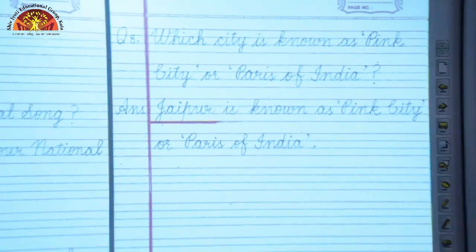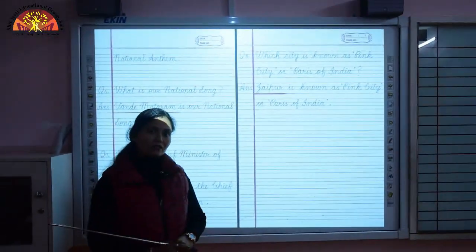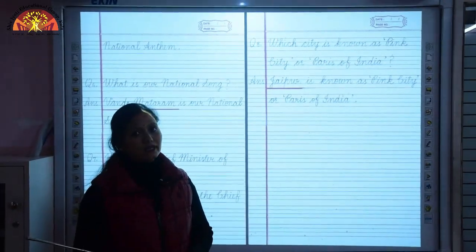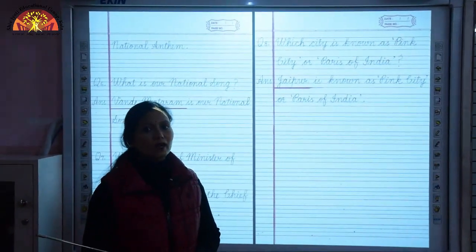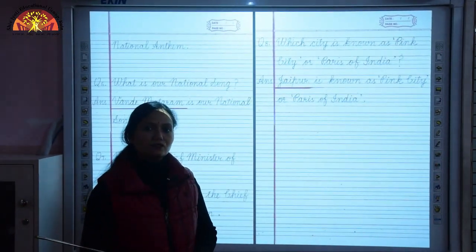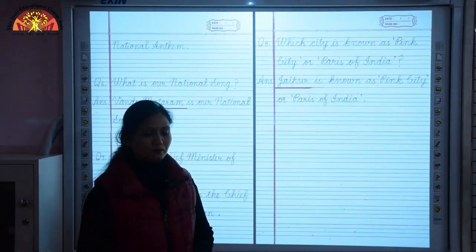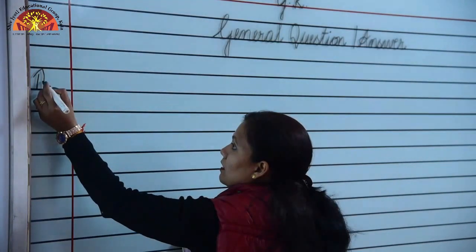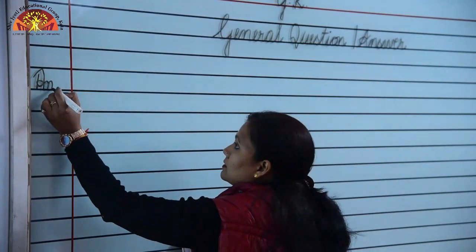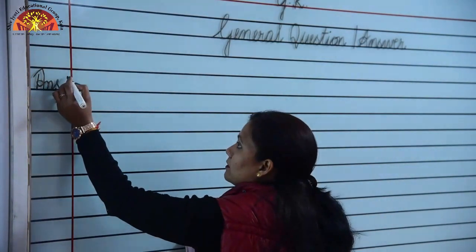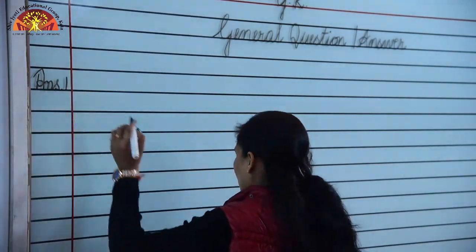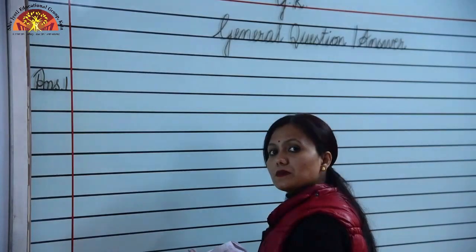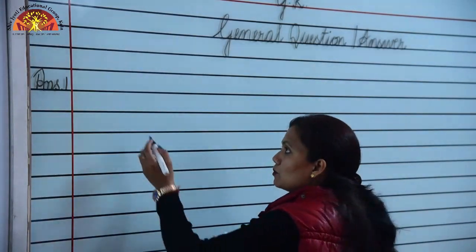Hope you all have understood the general question answers. Now let's see how to write these spellings on the board. Answer 1: Who is the Prime Minister of India? Mr. Narendra Modi.